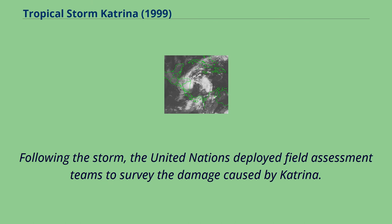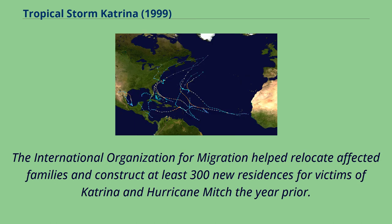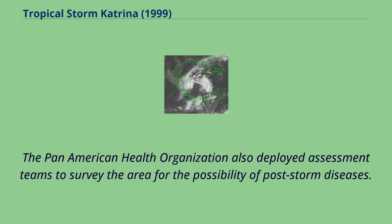Following the storm, the United Nations deployed field assessment teams to survey the damage caused by Katrina. The International Organization for Migration helped relocate affected families and construct at least 300 new residences for victims of Katrina and Hurricane Mitch the year prior. The Pan American Health Organization also deployed assessment teams to survey the area for the possibility of post-storm diseases.